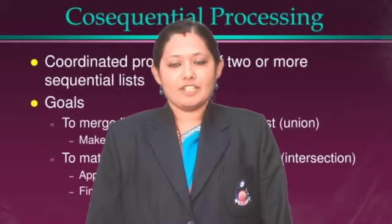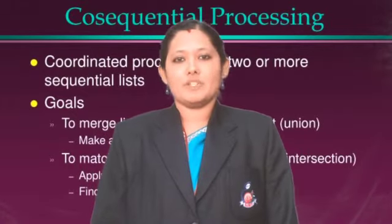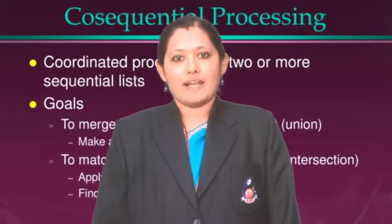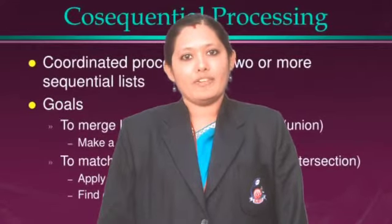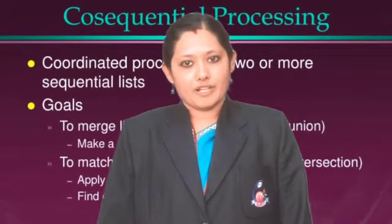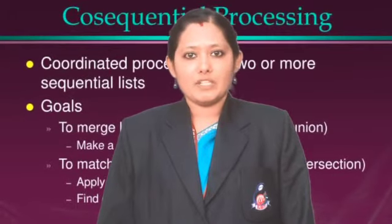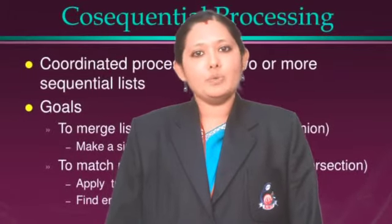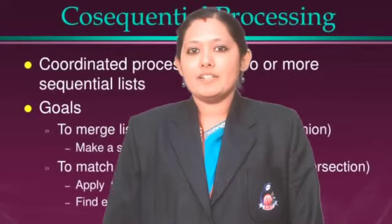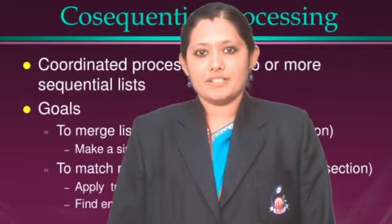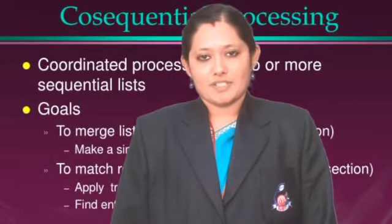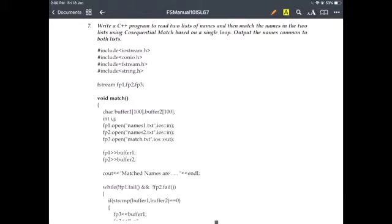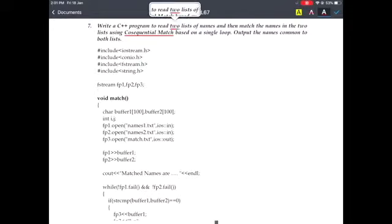The objective of the seventh program is to implement co-sequential processing. Co-sequential processing is parallel processing of two or more files to get one output file. In this case, we will be doing a co-sequential match wherein it will match two particular files and give us the output as common names in both the files. Co-sequential processing is processing two or more sequential lists to produce a single output list.